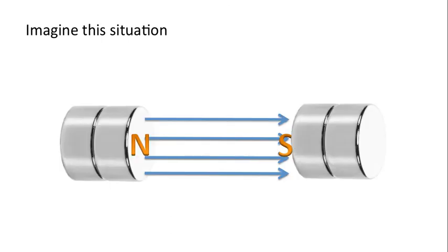Now this is one situation we haven't talked about — imagine the magnets are now facing side to side and here's the charged particle. If you're interested in this answer, please watch the next video which goes through three different examples. Have a great day.